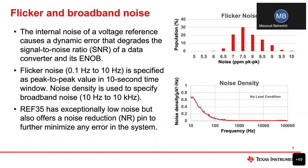Next we're going to talk about noise — specifically the internal noise of the voltage reference, which in turn causes dynamic error in the data converter and impacts the signal-to-noise ratio and effectively the effective number of bits in the system. There are two types of noise that we typically talk about. The first one is low-frequency flicker noise, which is typically in the 0.1 to 10 hertz range, usually specified as a peak-to-peak value in a 10 millisecond window. This is a very critical spec because flicker noise is very difficult to filter in the system. The higher frequency noise, known as noise density from 10 hertz to 10 kilohertz, is the second parameter shown in most voltage reference data sheets, and it's easier to filter because it's at the higher frequency.